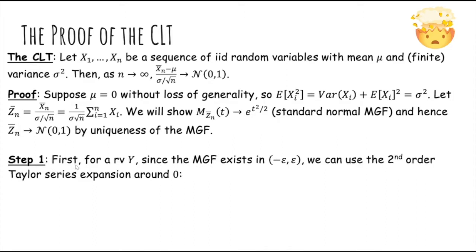Okay, the first step. For a random variable Y, since with mild conditions the MGF exists in this range, we can use a second order Taylor series expansion around zero. So that basically says that you can approximate MY(s) using MY(0) and its first and second derivatives. This is basically a quadratic approximation to the MGF of Y.